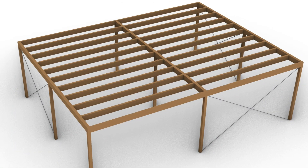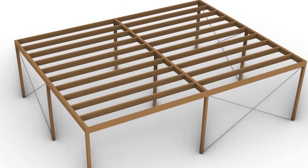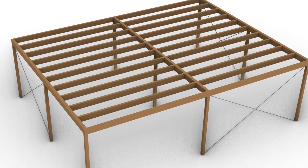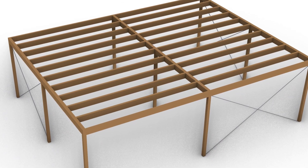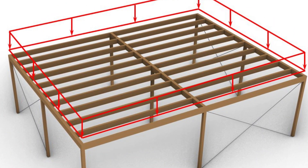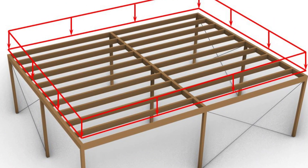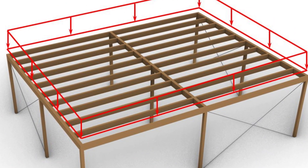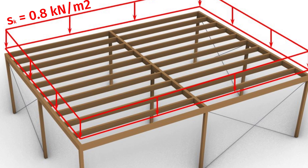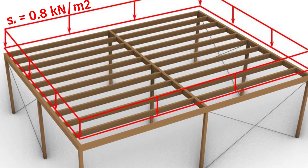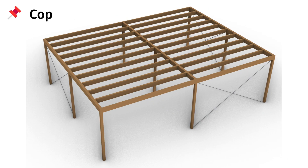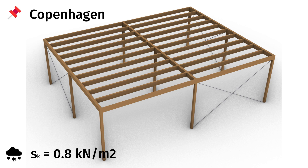For the structural design of the timber roof elements, the snow load is applied perpendicular to its surface with the area load of 0.8 kN per square meter. To summarize, for a flat roof located in Copenhagen, Denmark, the snow load is calculated as 0.8 kN per square meter.